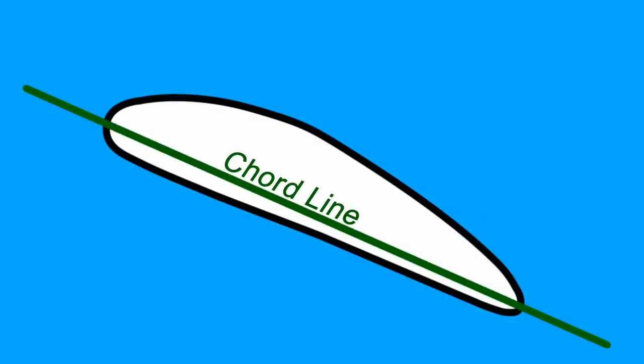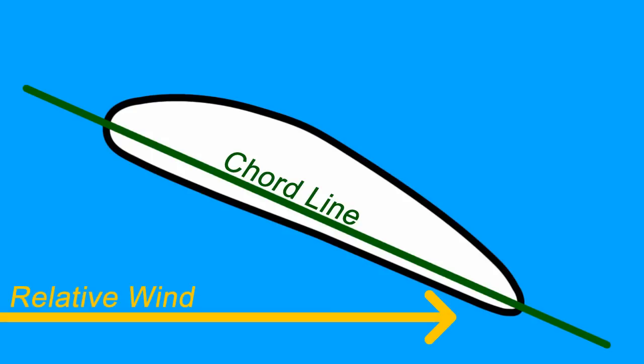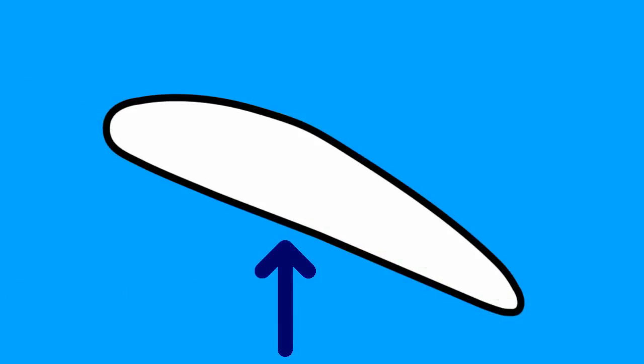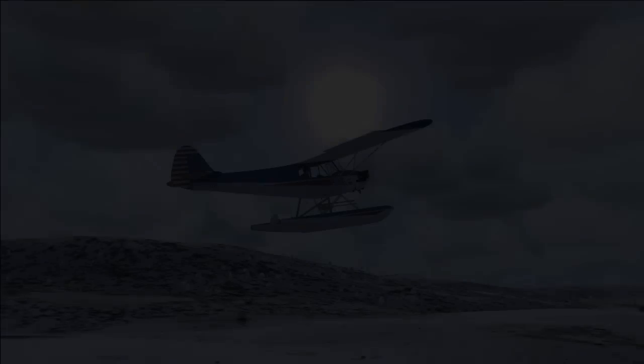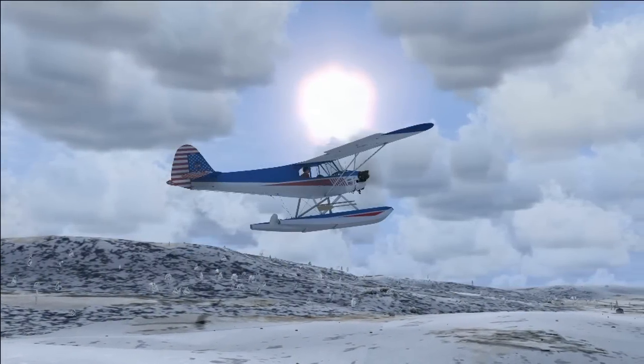Now let's simulate an airfoil that has just begun a climb with a strong nose-up attitude. As we can see here, the chord line has changed its angle. The airfoil now contacts a relative wind at an increased angle of attack. This makes the air flowing directly over the airfoil travel even faster, along with the relative wind impacting the wing. This results in a stronger lifting force pushing up on the airfoil. This is what angle of attack is all about.